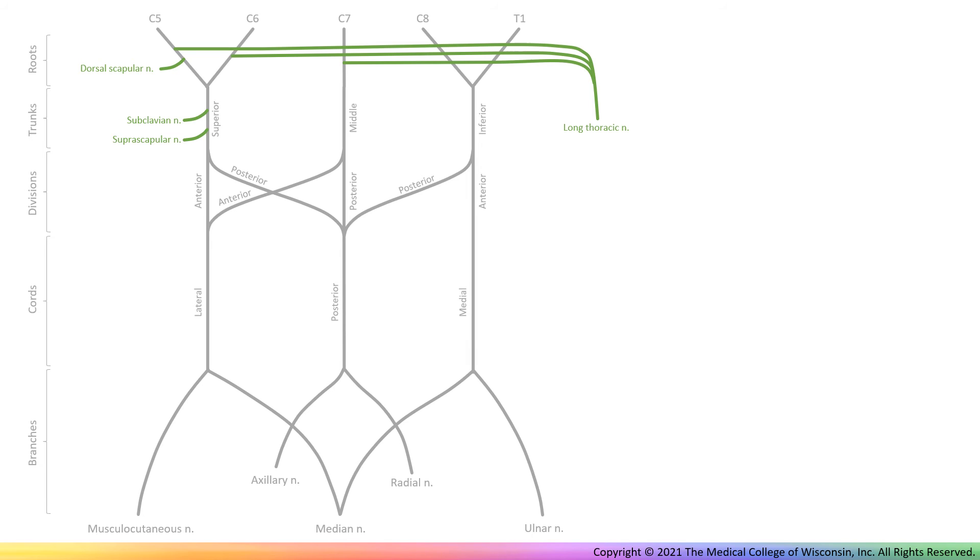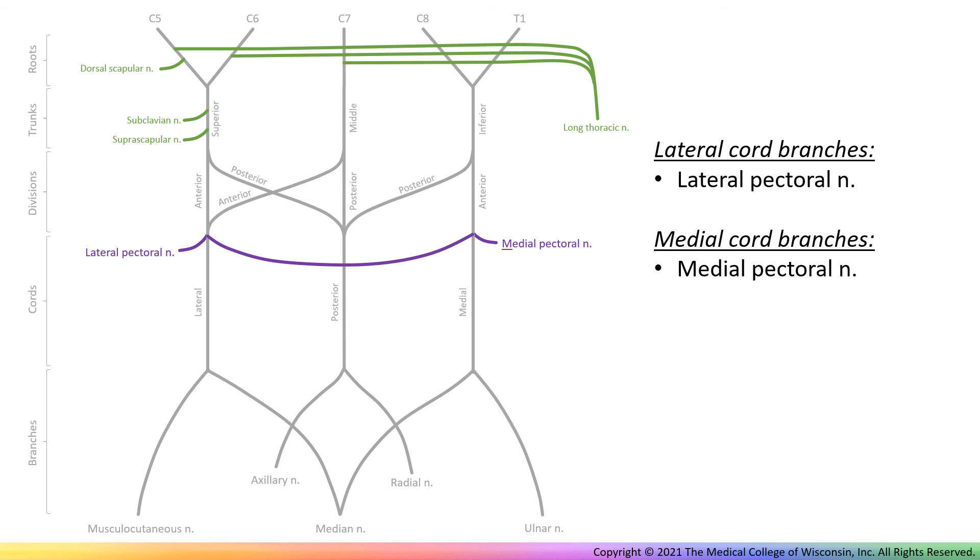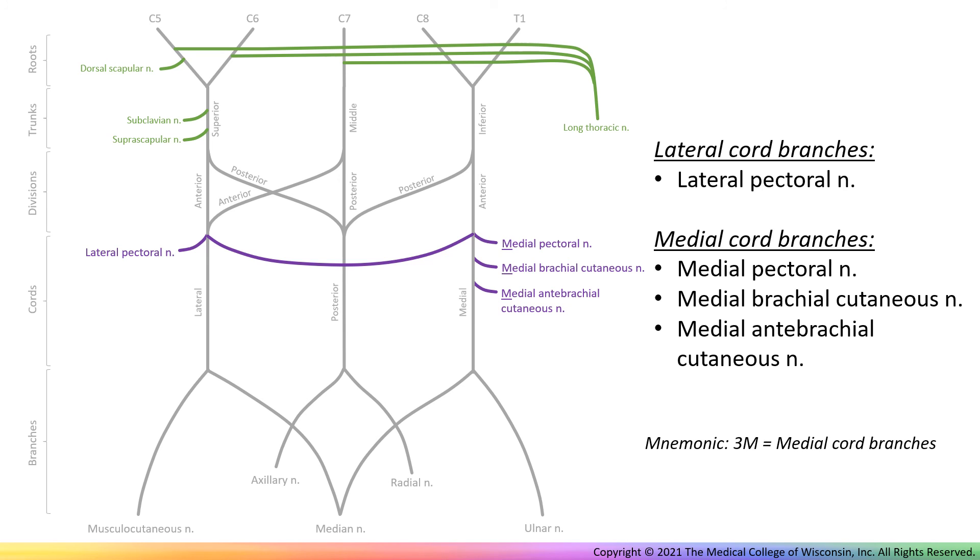Now add the lateral pectoral nerve off the lateral cord, and the medial pectoral nerve off the medial cord. Also off the medial cord, you can find the medial brachial and antebrachial cutaneous nerves, which travel to the skin of the arm and forearm. Note that all three branches of the medial cord begin with the letter M.